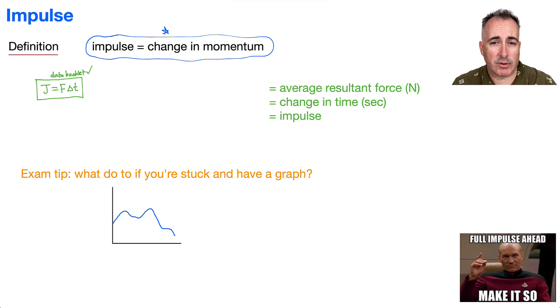Let's start defining some of the variables. F is going to be the average resultant force, and that's in newtons. We've got delta T, that's the change in time in seconds. And then we've got this new quantity called J, which is the impulse. What are the units of impulse? Well, if you look at the equation, F has units of newtons, delta T has units of seconds, so if they're multiplied, it must be newton seconds.